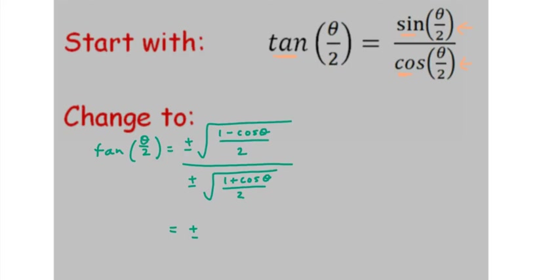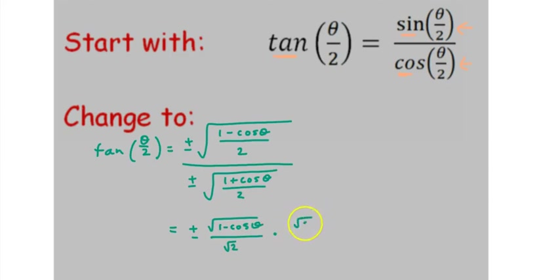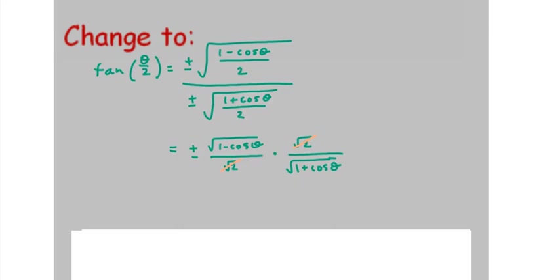What I'm going to do is treat this as a fraction divided by a fraction, and change it to multiplying by the reciprocal. So we have the square root of 1 minus cosine theta divided by square root 2, multiplied by the reciprocal of the bottom: square root 2 over the square root of 1 plus cosine theta. Based on that, we can cancel our square root 2s, leaving plus or minus the square root of 1 minus cosine theta over 1 plus cosine theta, putting them back into the same radical.